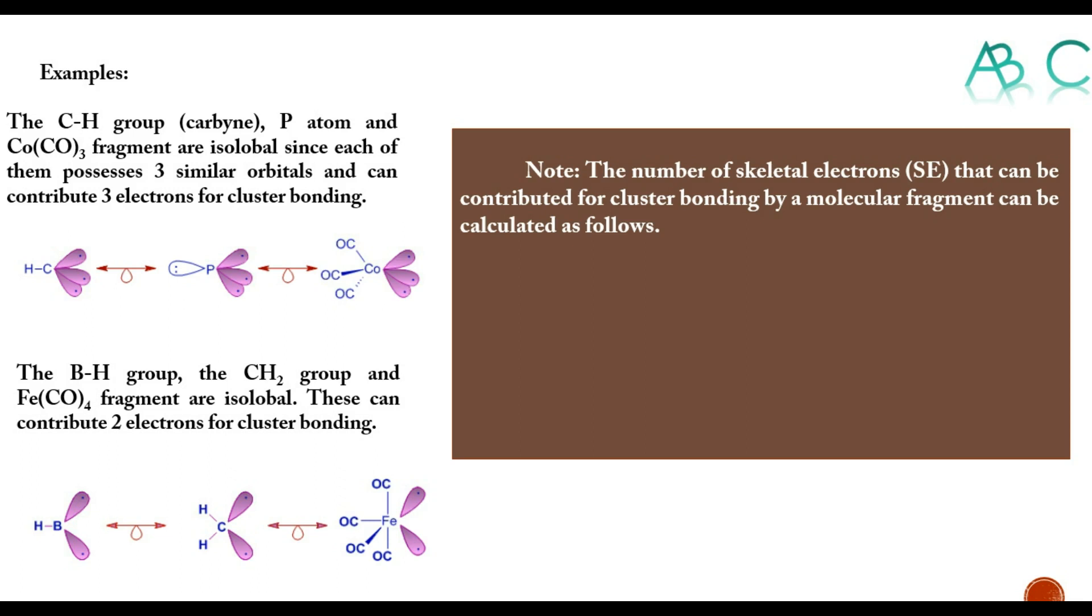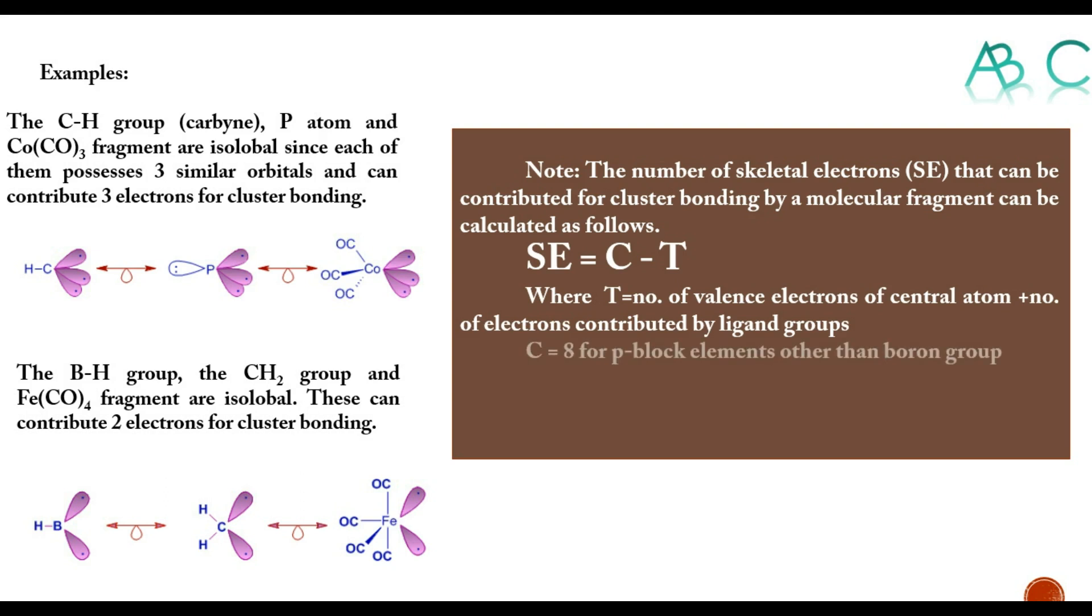The number of electrons contributed for cluster bonding by the molecular fragment can be calculated as SE (skeletal electrons) equals C minus T, where T is the sum of the number of valence electrons of the central atom and the number of electrons contributed by the ligand group, and C is the stable configuration.